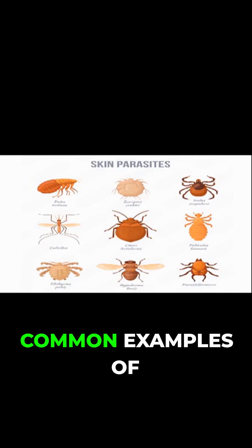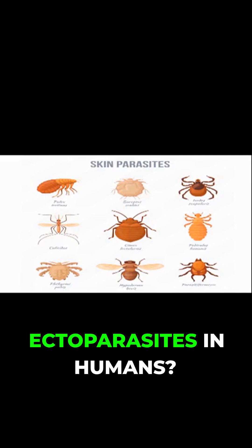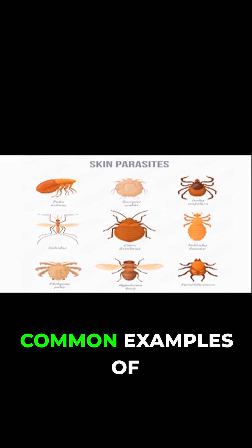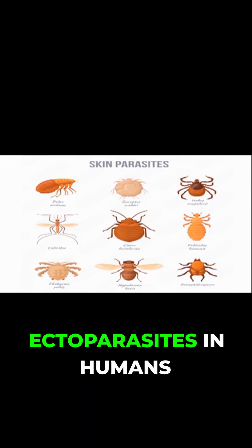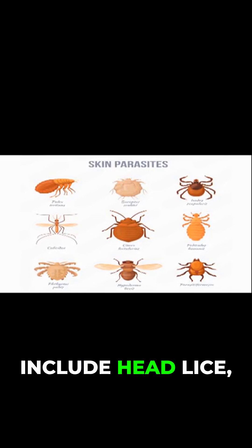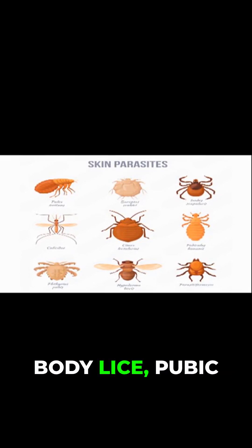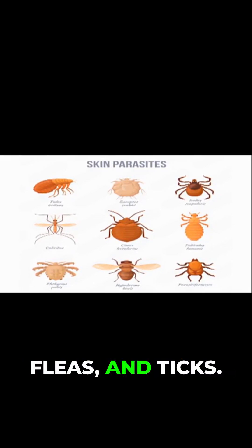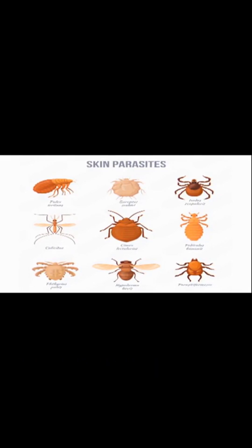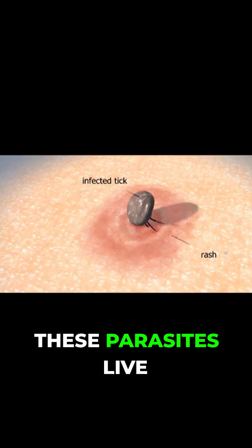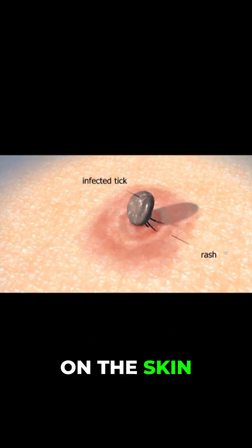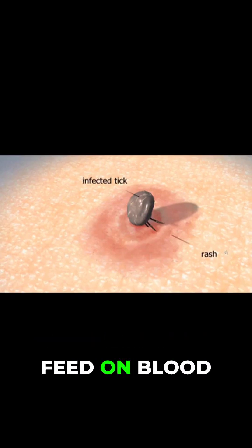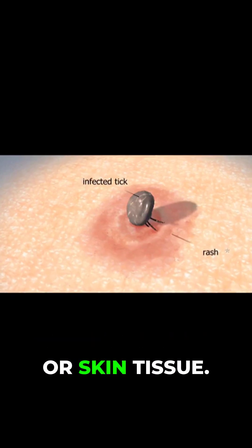Number 3: What are common examples of ectoparasites in humans? Common examples include head lice, body lice, pubic lice, scabies mites, fleas, and ticks. These parasites live on the skin or hair and feed on blood or skin tissue.